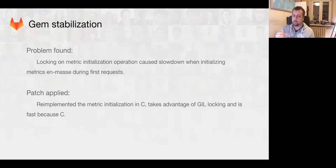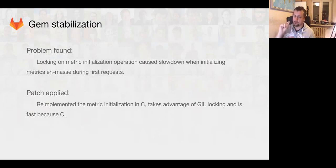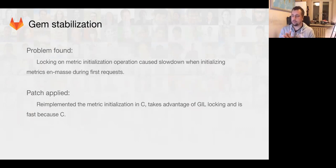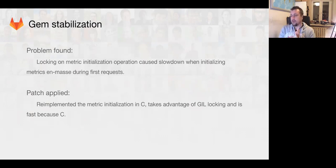Right now we are in a phase where we are trying to optimize some of the operations. One of those is metric initialization. We found that a lot of the InfluxDB metrics slowed down the system at initialization, making the first request to a resource take longer. There were also locking issues — we had locking so no other operation can be done on the file at the same time when we add another entry, preventing concurrent threads from corrupting the same file. We re-implemented this in C to contend with the Global Interpreter Lock, and it's also faster because it's C.